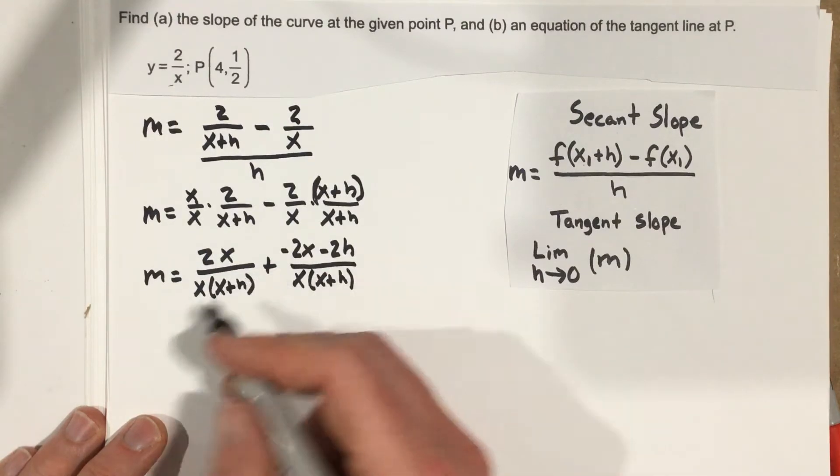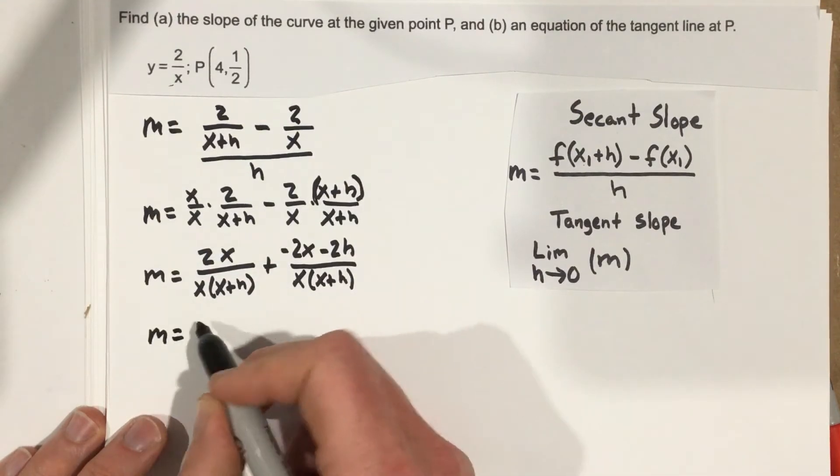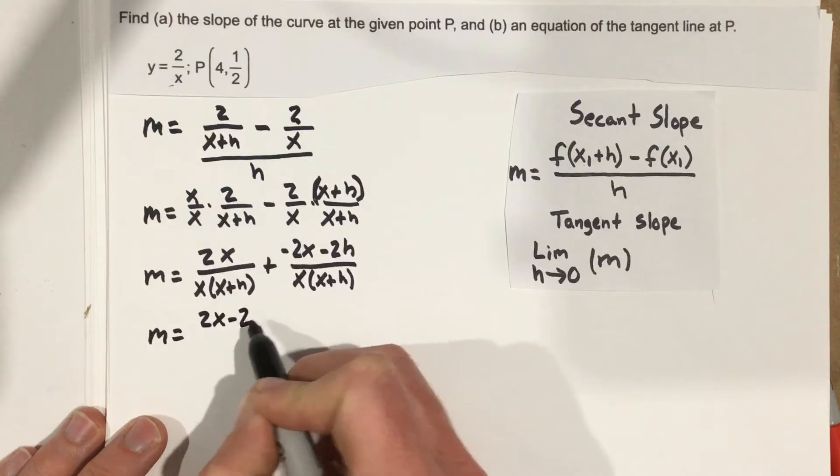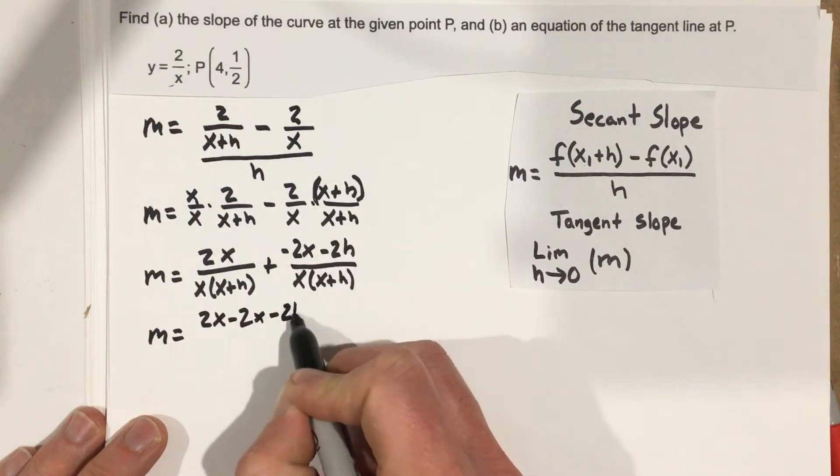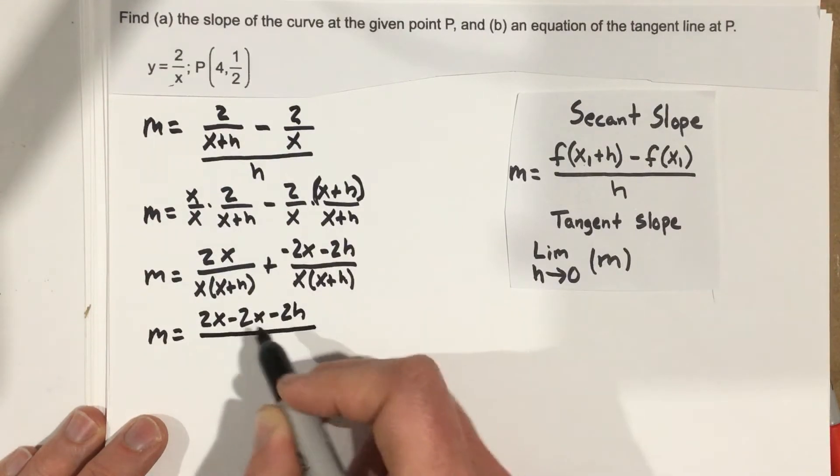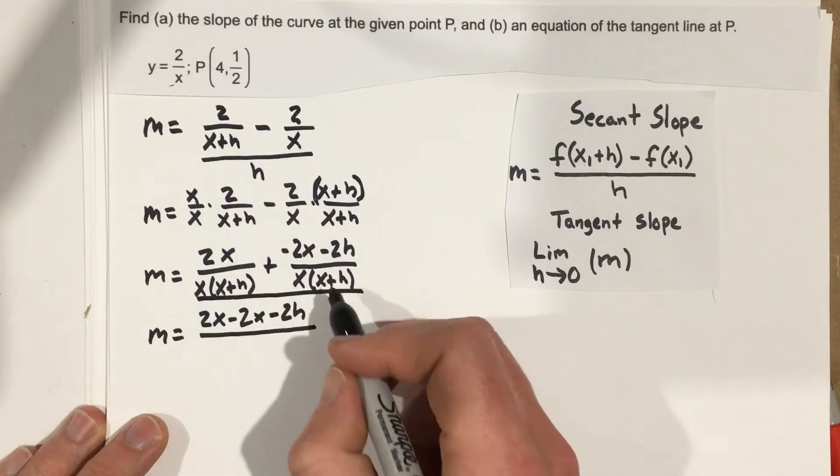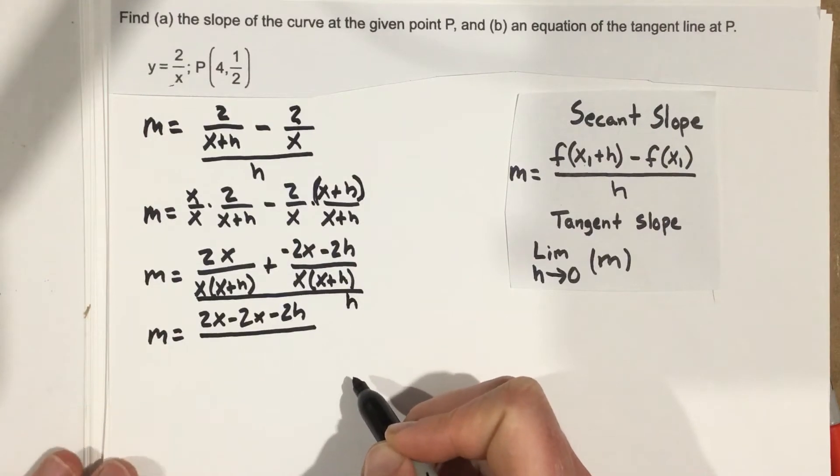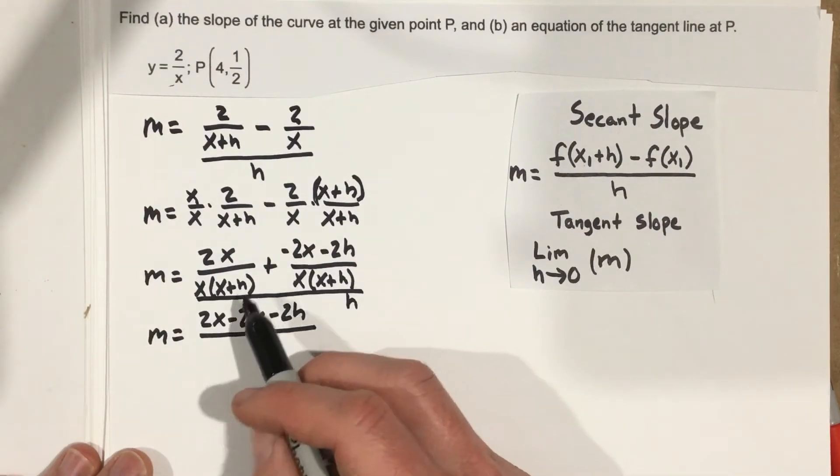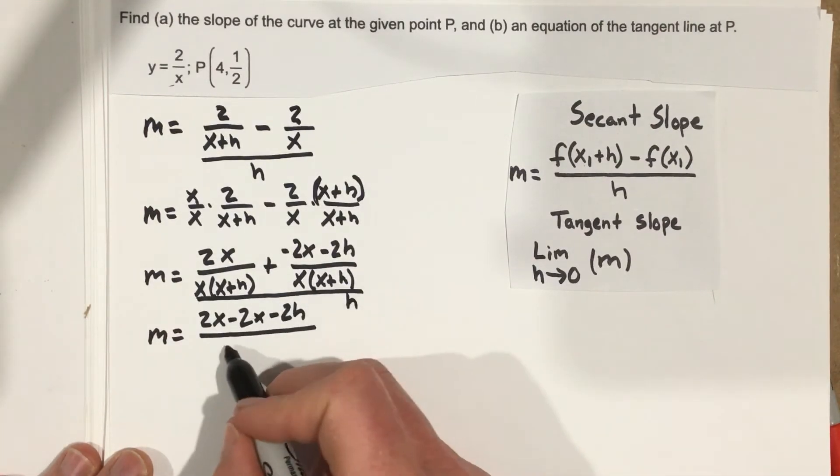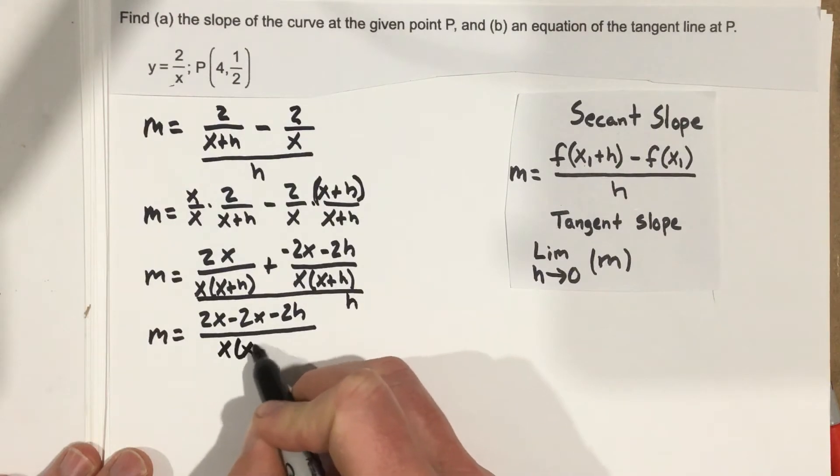Now when I combine these together, I end up with m equals 2x minus 2x minus 2h all over... and I forgot to put this over h. So this is over h. I'm going to kind of write it right there. So this is over x times x plus h, which is over h.